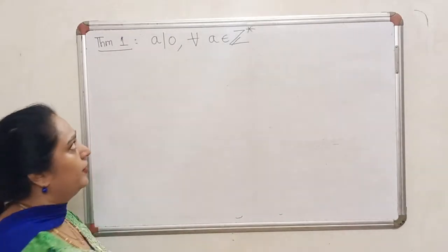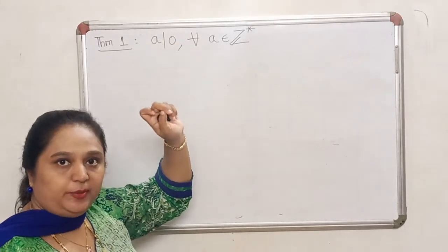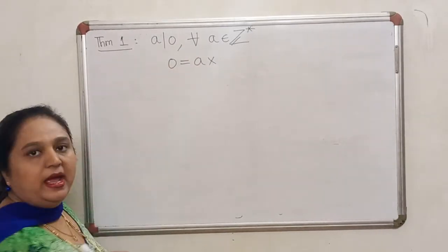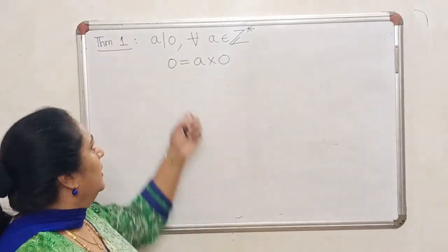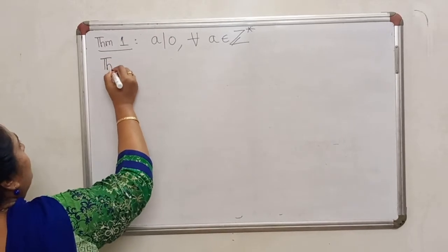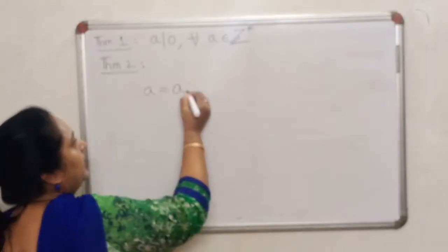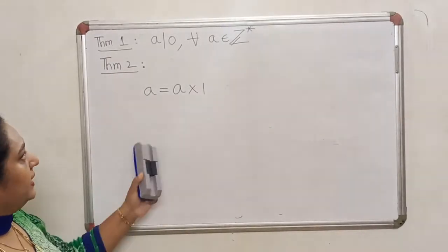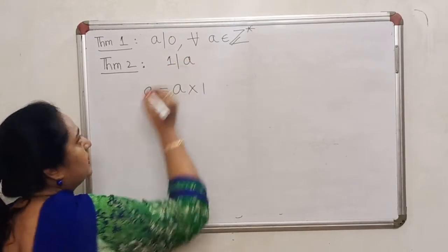If you really want to look at the proof: when I say A divides zero, it is the second number which has to be a multiple of the first. So I should be able to write the second number as the first number multiplied by some integer. You can always write zero as A times 0. Also, if you take any integer A, you can write it as A times 1. So if we take any integer A, we can write it as an integral multiple of 1, so I can say that 1 divides A.